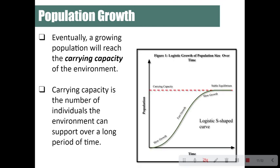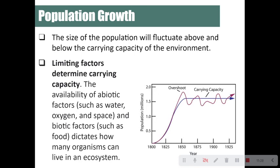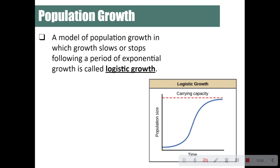Eventually, a growing population will reach the carrying capacity of the environment — the number of individuals the environment can support over a long period of time, representing a stable equilibrium. The population size will fluctuate above and below the carrying capacity, which is determined by limiting factors: the availability of abiotic factors such as water, oxygen, and space, and biotic factors such as food. A model where growth slows or stops following exponential growth is called logistic growth.